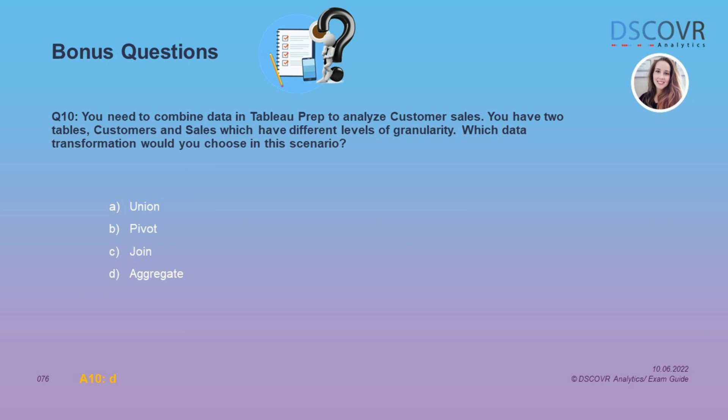For question number 10, let's say you need to combine data in Tableau Prep to analyze customer sales, and you have two tables — customers and sales — which have different levels of granularity. The question asks which data transformation you would choose. In Tableau Prep Builder, if you need to adjust the granularity of your data, you need to use the aggregate option. The answer is D.